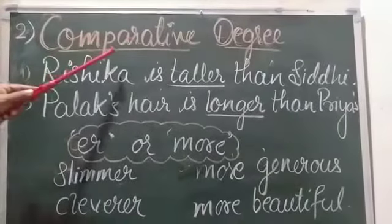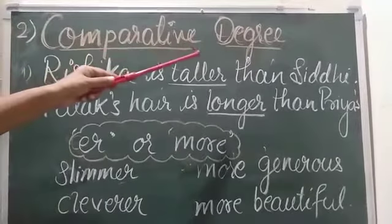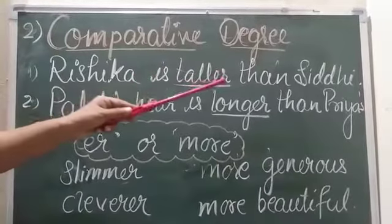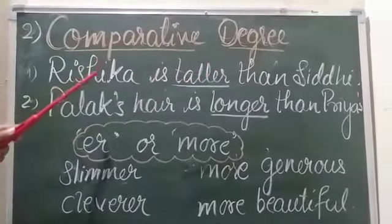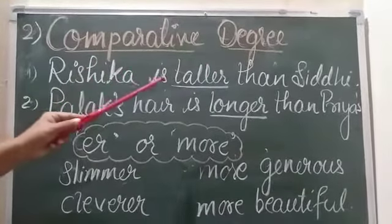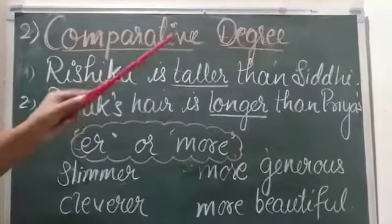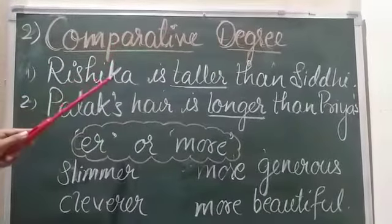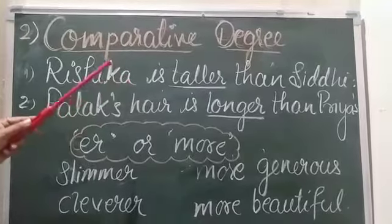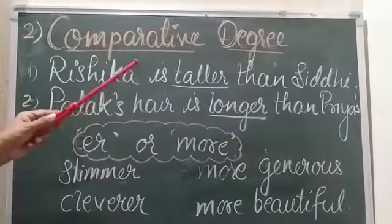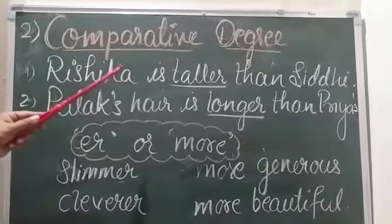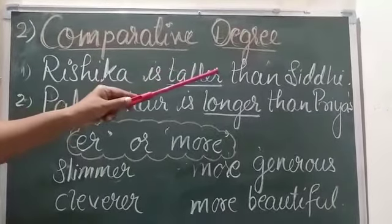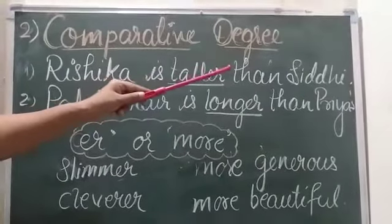Next is comparative degree. Rishika is taller than Siddhi. Here Rishika is compared to Siddhi, and we see that two persons are compared — both are different. Rishika has greater height and Siddhi is a bit short.